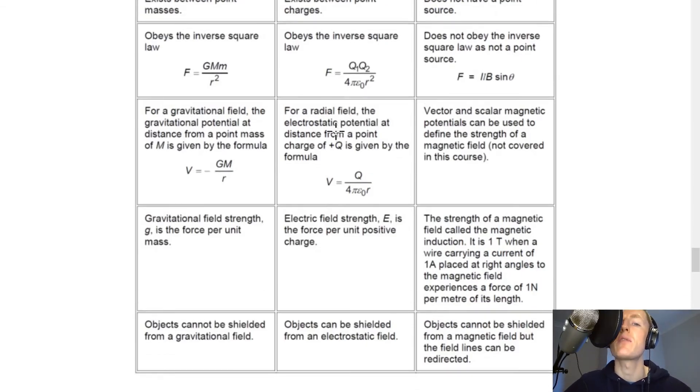And for electrostatic or electric fields it says that for a radial field the electrostatic potential or electrical potential at distance from a point charge of plus Q is given by the formula V equals Q over 4 pi epsilon not R. And lastly for magnetic fields it says that vector and scalar magnetic potentials can be used to define the strength of a magnetic field but they are not covered in this course.